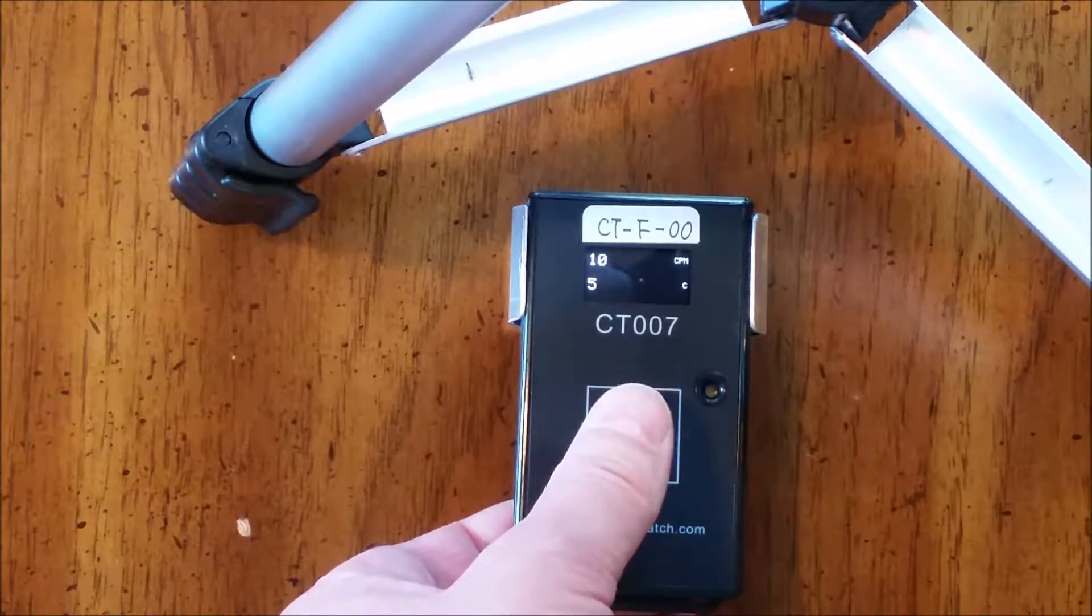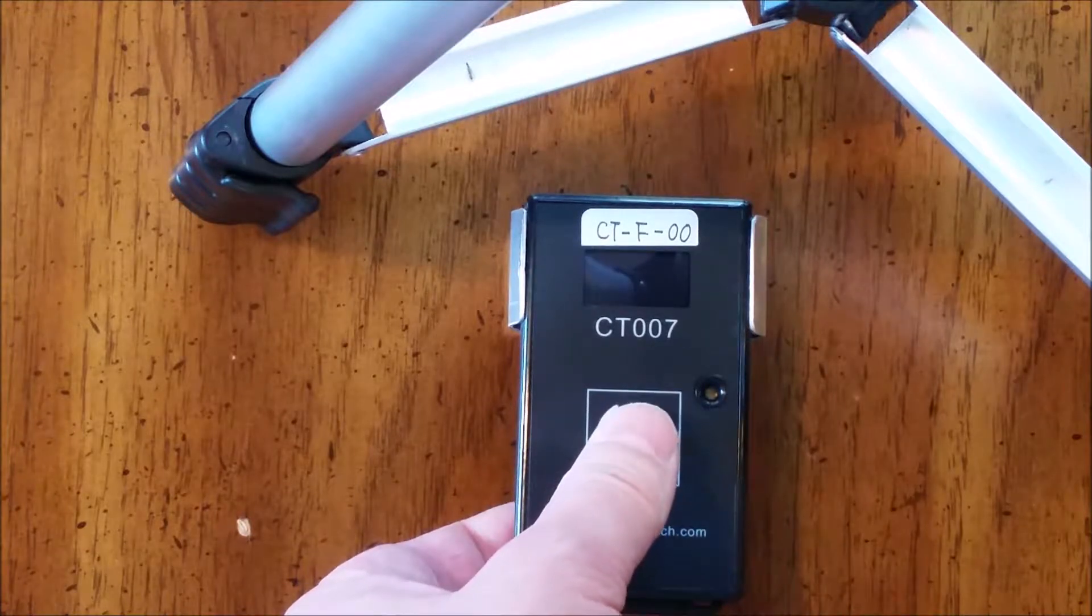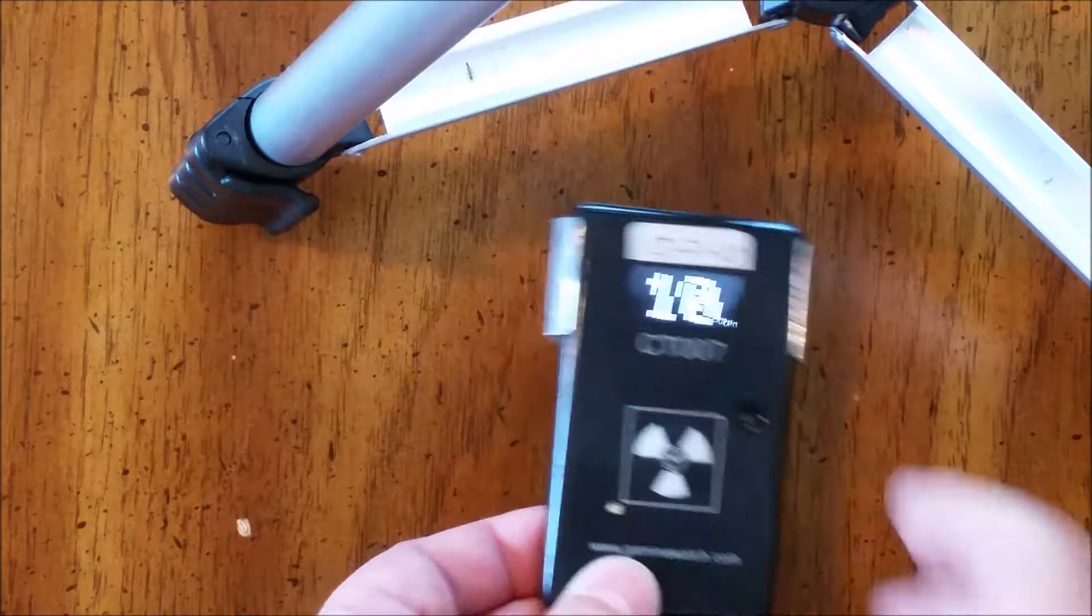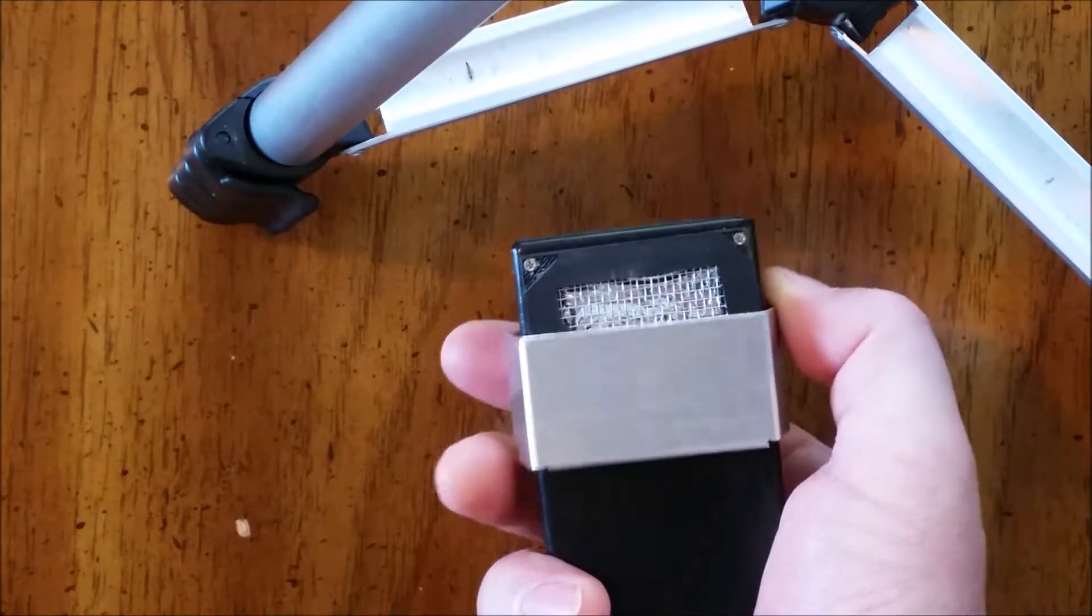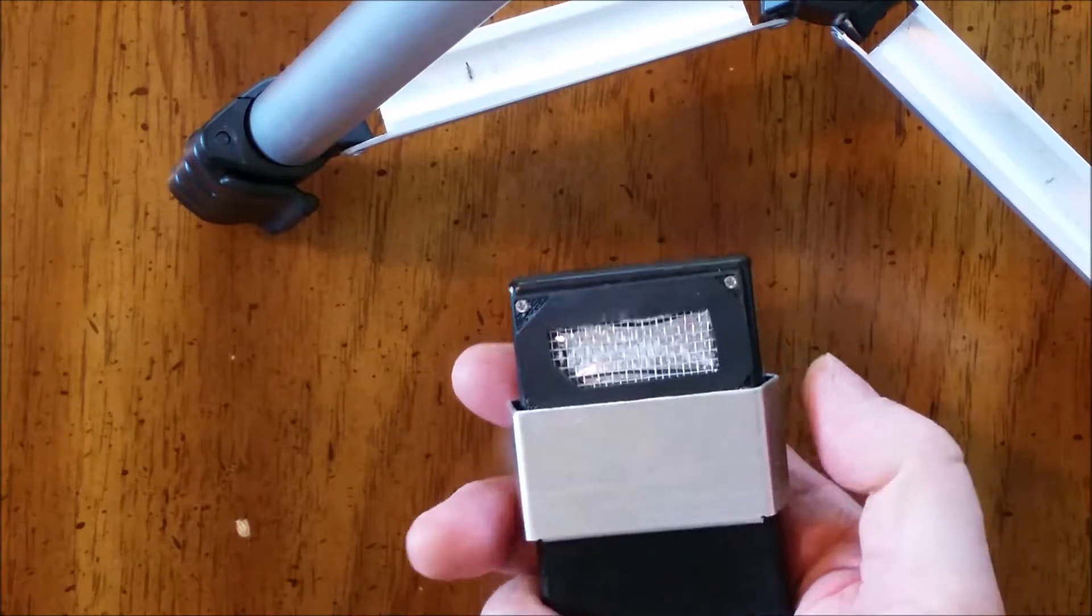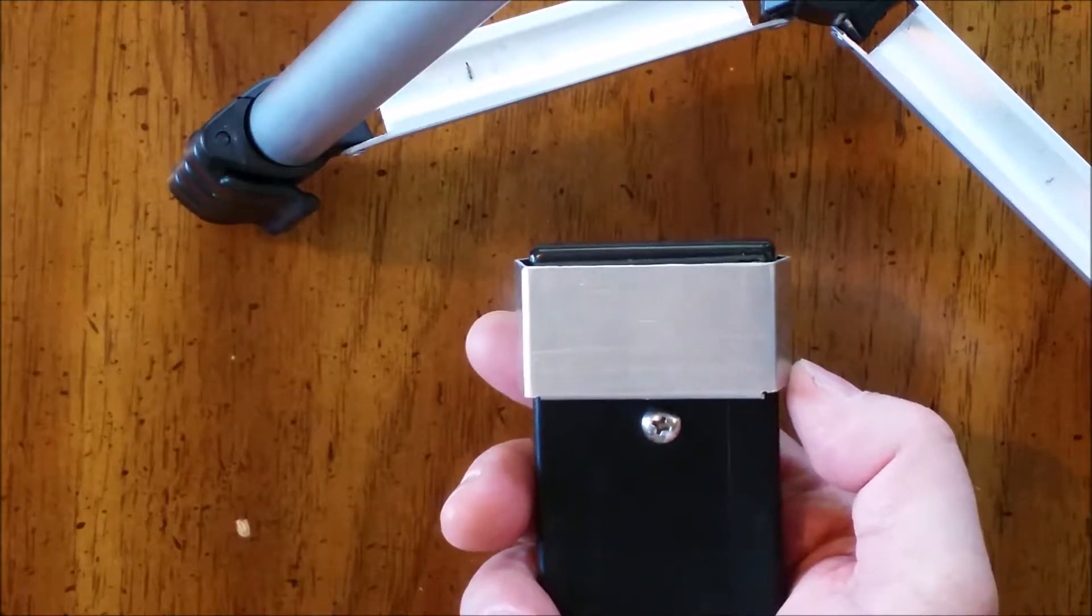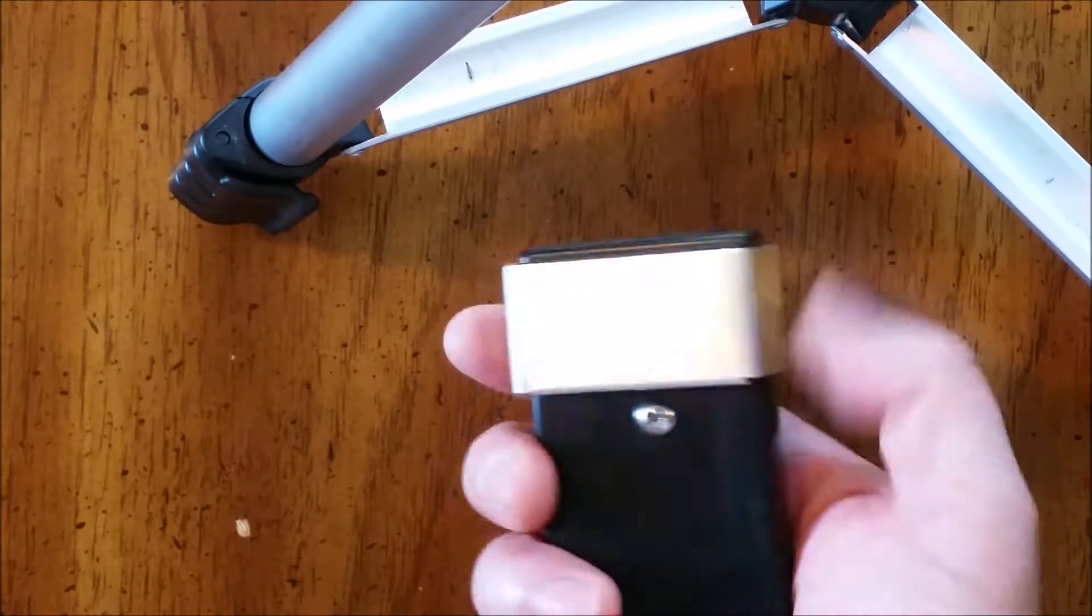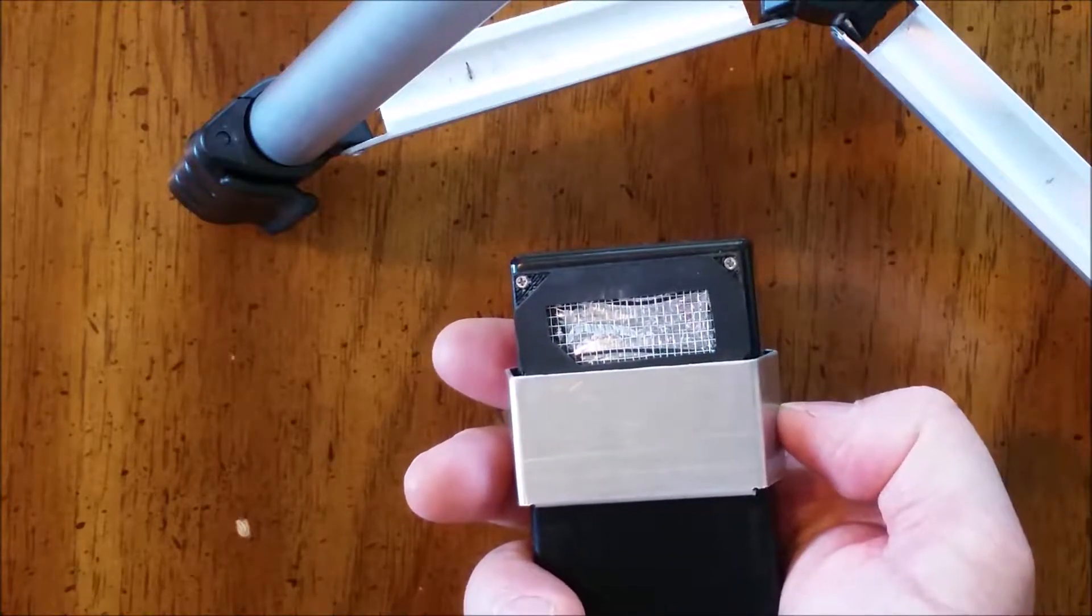Let's go back to our CPM display. The instrument has a sliding cover to protect the window. When that cover is closed, the instrument only sees gamma radiation. When it's open, we see alpha, beta, and gamma radiation.